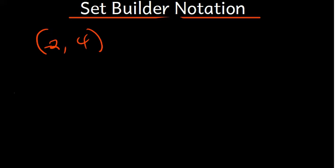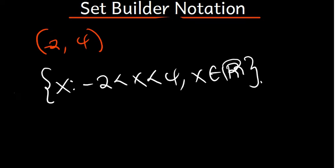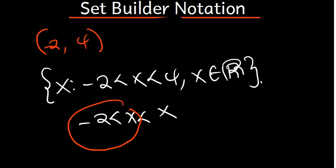When using interval notation, we consider real numbers. To write this in set builder notation: x such that negative 2 < x < 4, and x is a member of the real numbers. This is the same as saying x is greater than negative two and x is less than four.